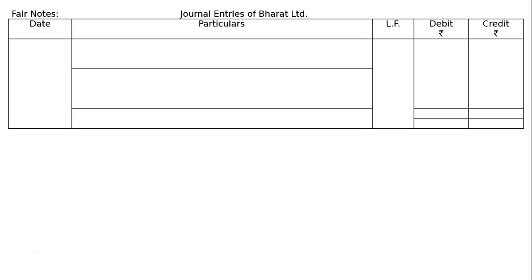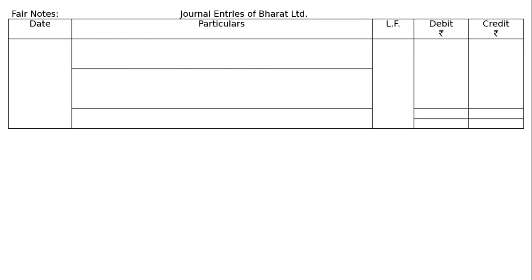After drawing the proper format, we can pass the first call due entry. We have to start from in between since it is stated that Bharat Limited made the first call. Hence, we start from the due entry of the first call. Date: 1st March 2006. Share first call account debited to share capital account, being share first call money due on 1 lakh shares at the rate of Rs. 2 per share — that is 1 lakh into 2, Rs. 2 lakh in the debit and credit columns.